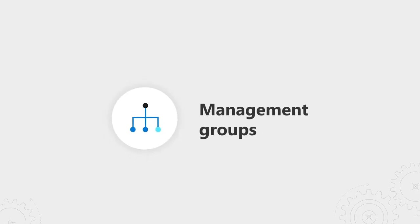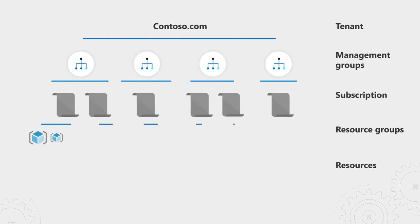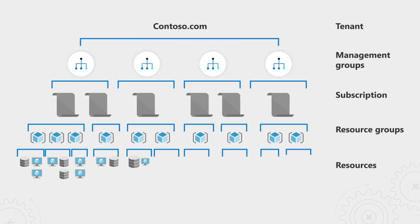One of the top customer pain points for any cloud architect is keeping track of all the subscriptions in the environment. We often see dozens of subscriptions per tenant, or even hundreds if you're a large customer. To solve for this, we've developed a capability called Management Groups, which is the highest-level grouping construct under your tenant for your subscriptions, resource groups, and resources. Management Groups are the top-level grouping construct that essentially organizes all your subscriptions and resources.